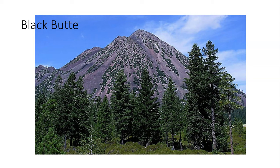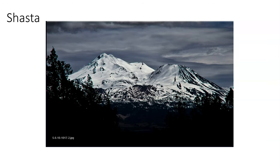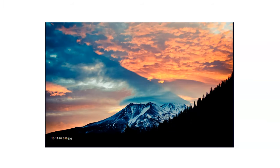In summary, although the Cascades were formed essentially by subduction, there is much more to the story. It is an extremely volcanically complex area with eruptions of basalt, andesite, and rhyolite — as well as many types in between — which is not your cookie-cutter three volcanic rock types. Here's a beautiful image of Mount Shasta as the sun sets. Catch you guys in the next video.